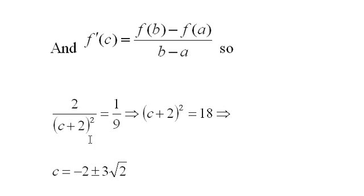and I end up with c = -2 ± 3√2. It looks like I end up with two c's, but only one of these is in the domain from 1 to 4.